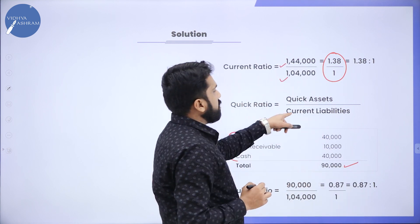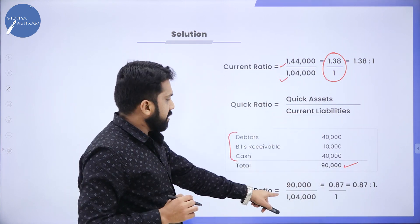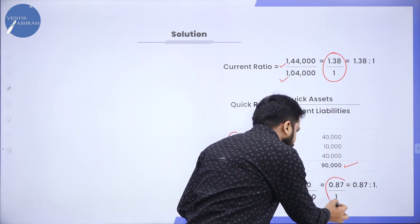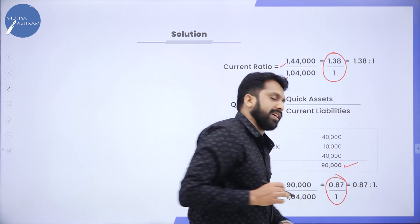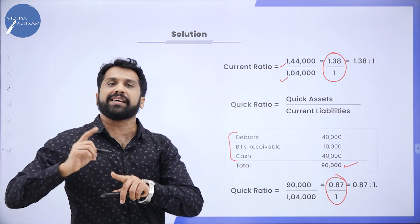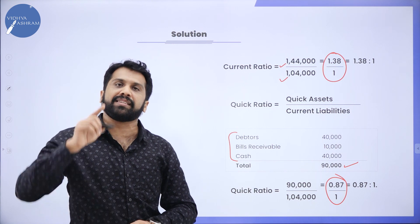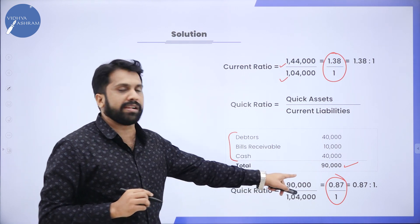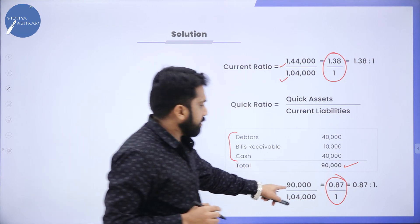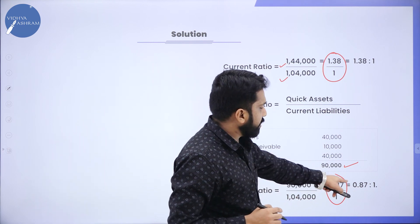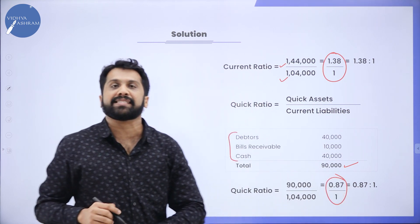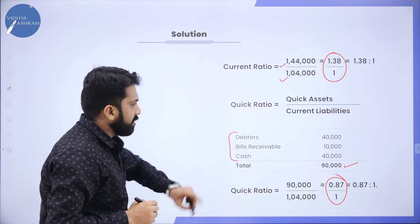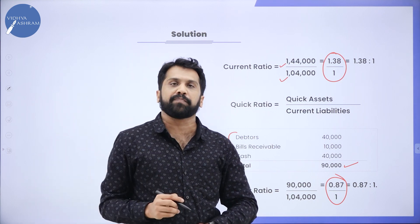Current Liability is already calculated at 1,04,000. Dividing Quick Asset by Current Liability, your answer is 0.87 divided by 1, or 0.87 is to 1. That is your 6-mark problem.